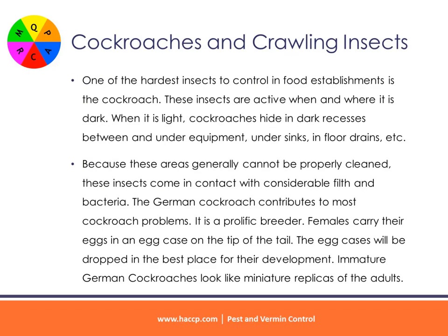Cockroaches and Crawling Insects. One of the hardest insects to control in food establishments is the cockroach. These insects are active when and where it is dark. When it is light, cockroaches hide in dark recesses between and under equipment, under sinks, in floor drains, etc. Because these areas generally cannot be properly cleaned, these insects come in contact with considerable filth and bacteria.